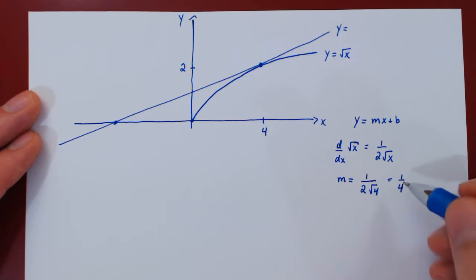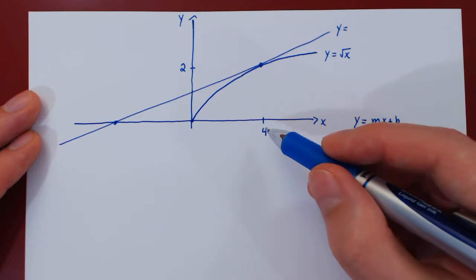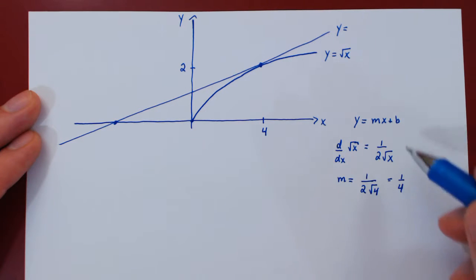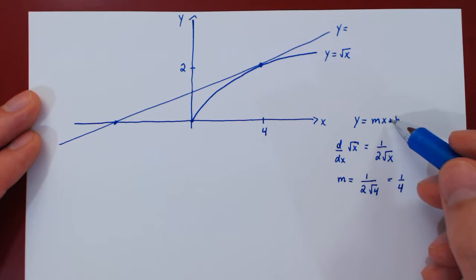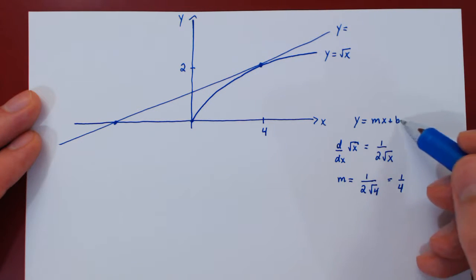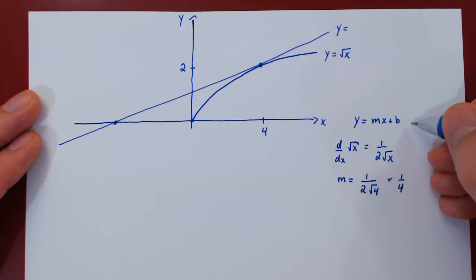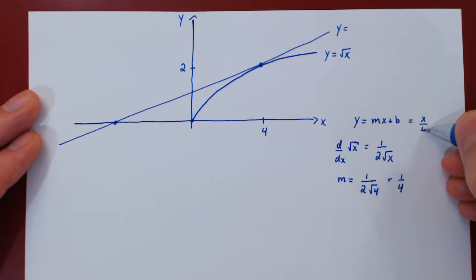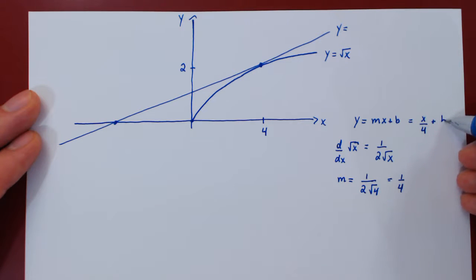Now we have the slope of the tangent line to root of x at x equals 4. The slope is 1 quarter, so the line will be x over 4 plus b.